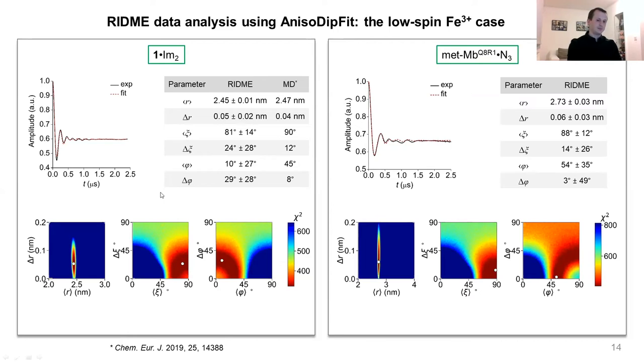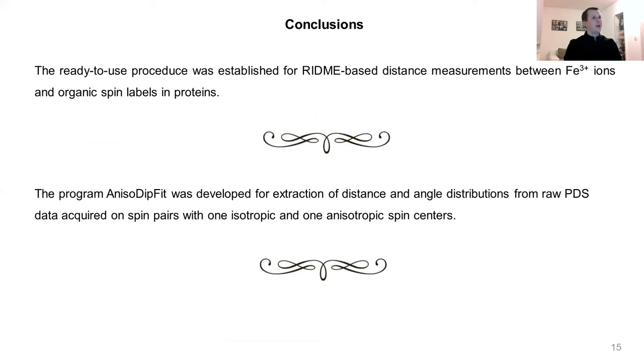To make a short conclusion: the ready-to-use procedure was established for the RIDME-based distance measurements between iron ions and organic spin labels in proteins, and the program anisoDipFit was developed for extraction of distance and angular distributions from raw PDS data acquired on spin pairs with one isotropic and one anisotropic spin center.